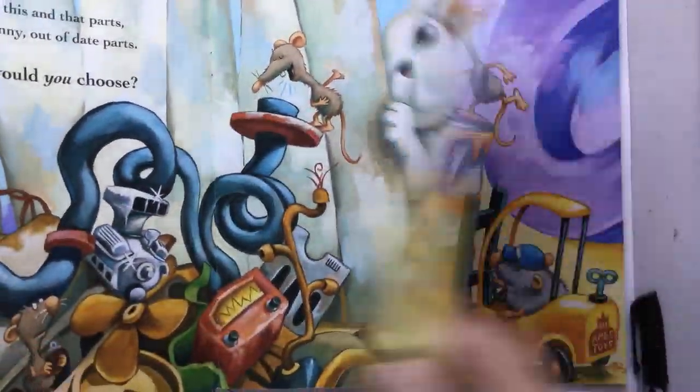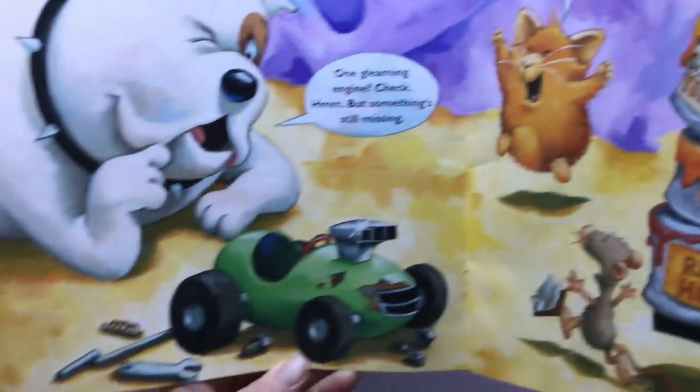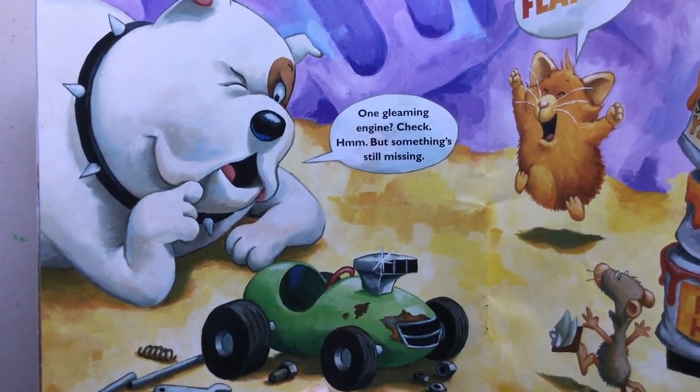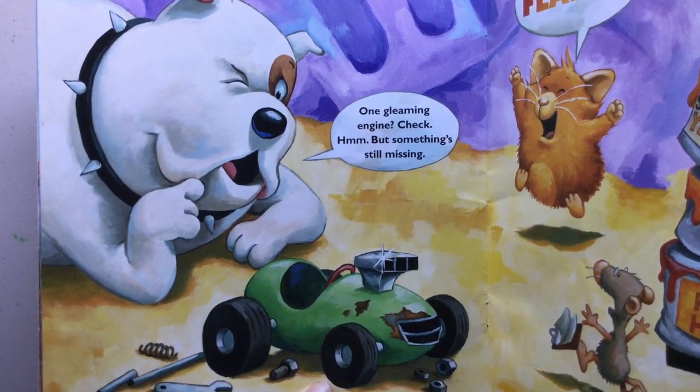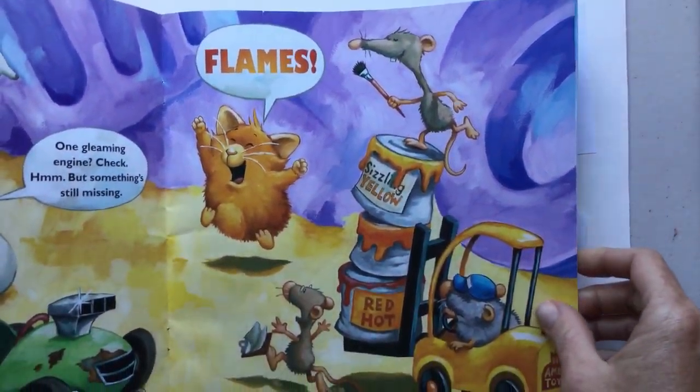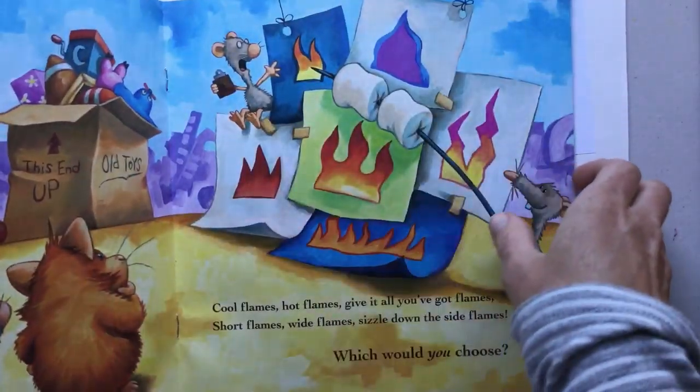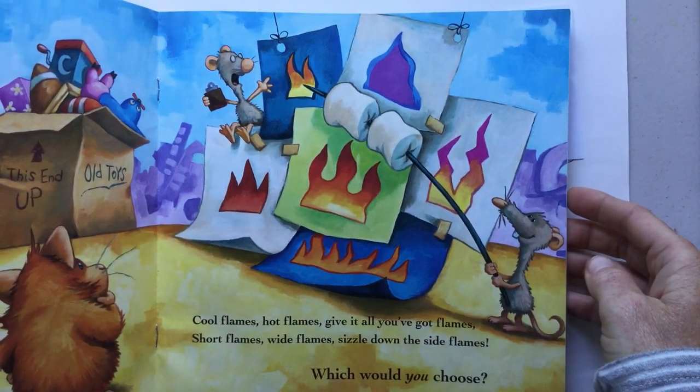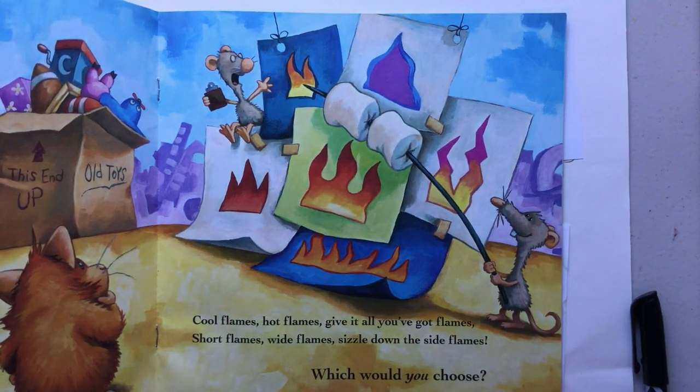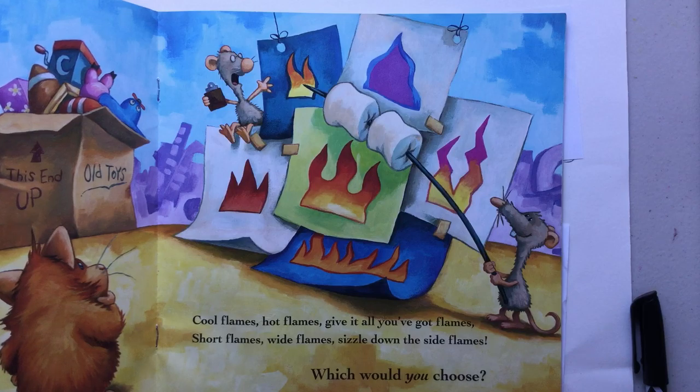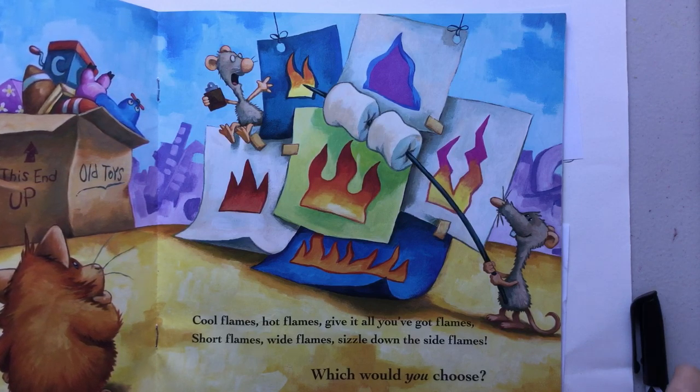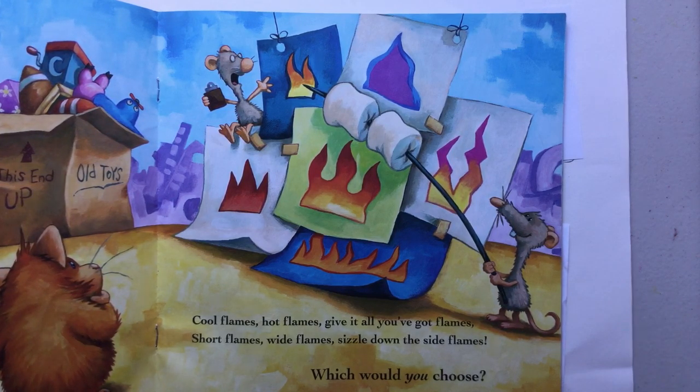All right, here we go. Let's see what hamster chooses. One gleaming engine. Check. Hmm. Something's still missing. Flames. Let's see. There they are. Checking them out. Cool flames, hot flames. Give it all you got flames. Short flames, wide flames. Sizzle down the side flames. Which would you choose? Those are some cool looking flames.